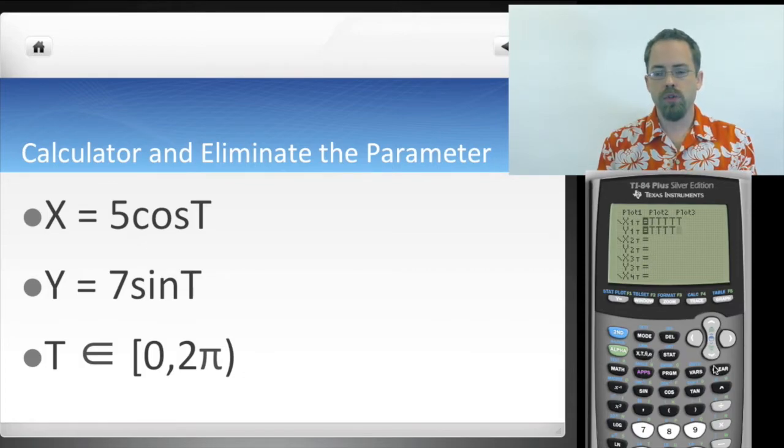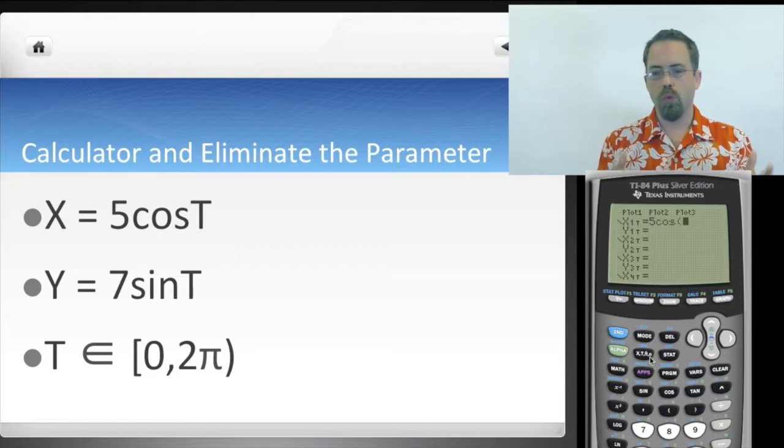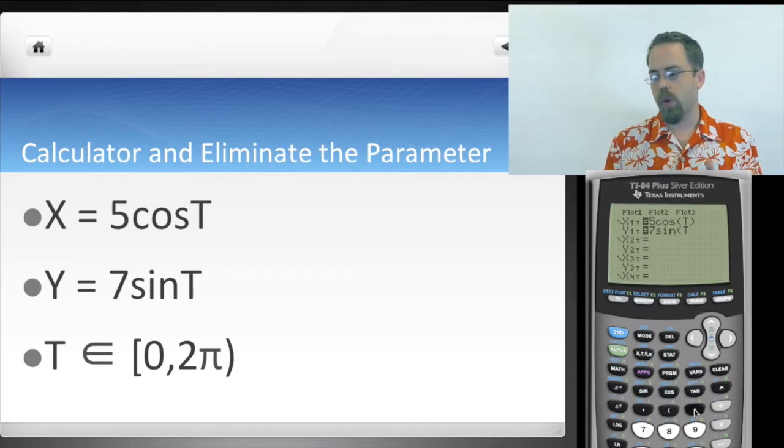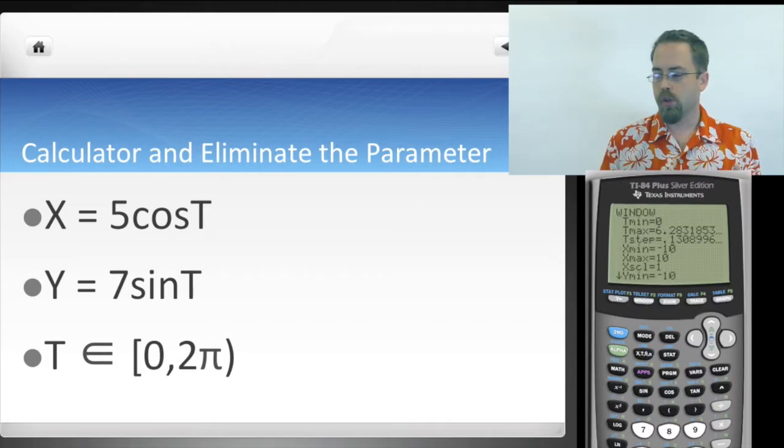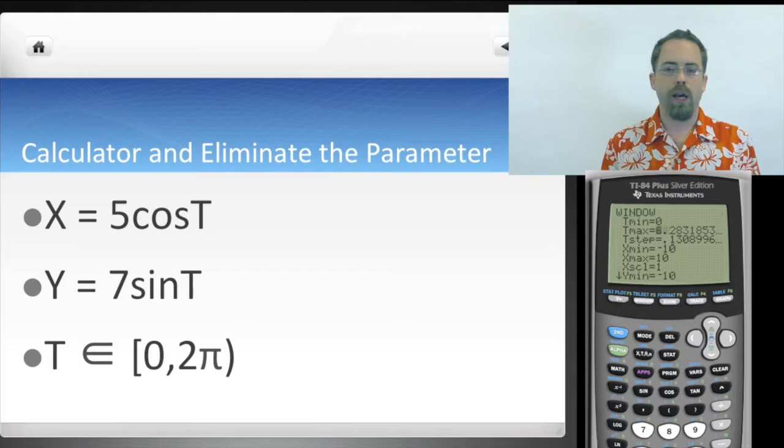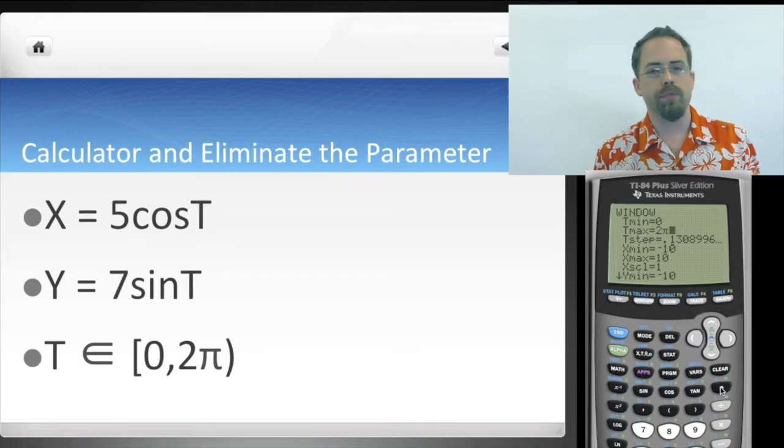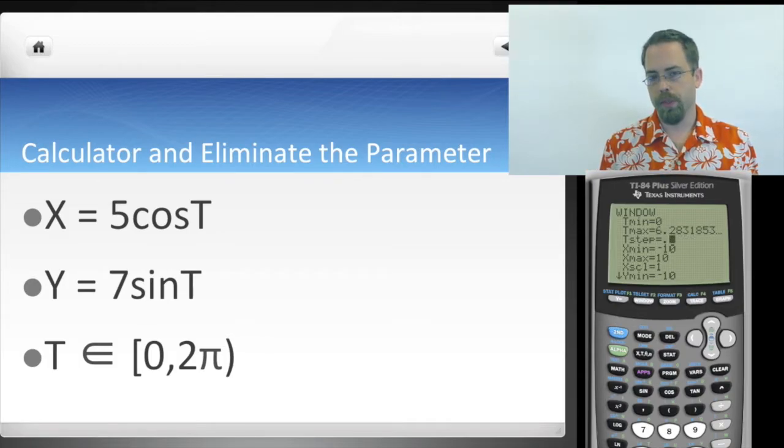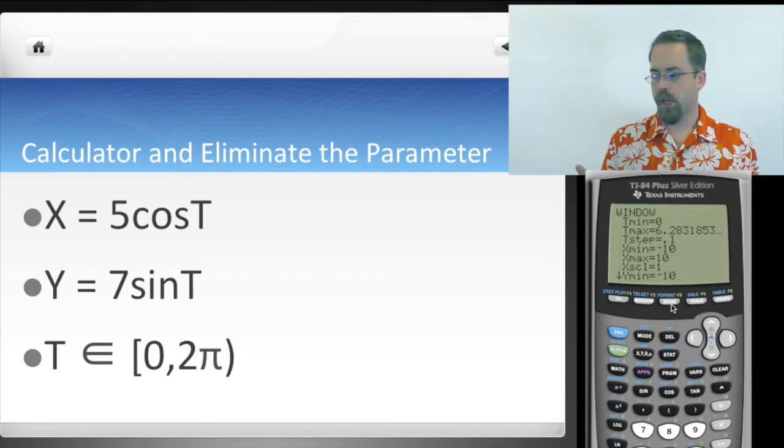So, enter into X1, five cos t, put into Y1, seven sine t, and then press window and make sure that your t goes from zero to two pi, with maybe a t-step of like 0.1 or something. What shape do you get?